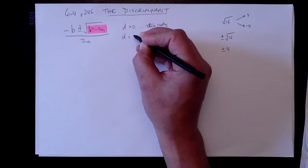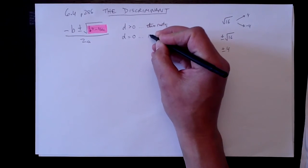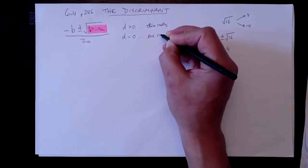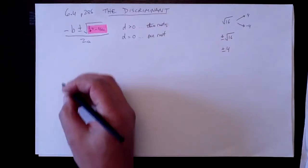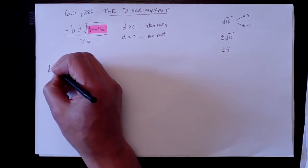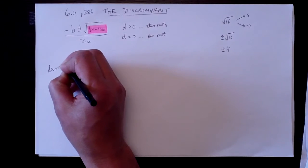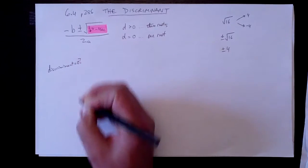If d equals zero, there will be only one root. Because we'll forget about that, we'll be left with, here, let me just put this here, discriminant equals zero, question mark.